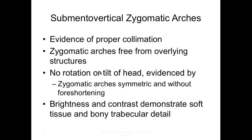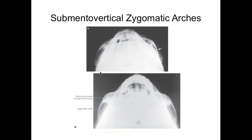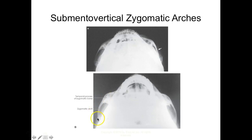For the SMV of zygomatic arches: proper collimation, zygomatic arches free from overlying structures, no rotation or tilt evidenced by symmetric arches without foreshortening, and appropriate brightness and contrast to visualize bony trabecular detail. A good image shows a fracture on the left zygomatic arch clearly, with the temporal process of the zygomatic bone and zygomatic arch well demonstrated. This is exactly what we want to see.